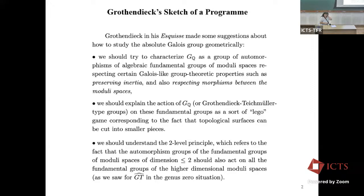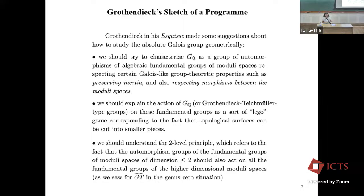He never mentioned doing it in only genus zero. That came from Drinfeld and braided tensor categories. Grothendieck always mentioned doing all moduli spaces and all genera. The properties of Galois that we know are that they preserve inertia and respect morphisms between the moduli spaces. These morphisms include smaller pieces into bigger pieces — what he basically called Amido. The overall project was twofold: one is to describe the whole group of automorphisms that do this, which is basically GT, except we're going to see the higher genus GT. The other is to see if we need more conditions to characterize the Galois image inside there, which is still the open question.